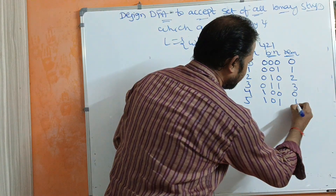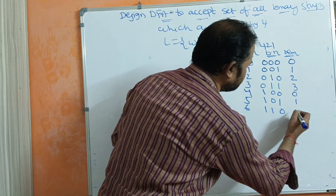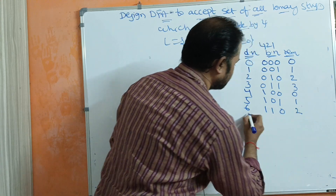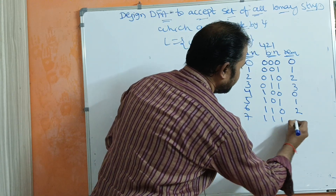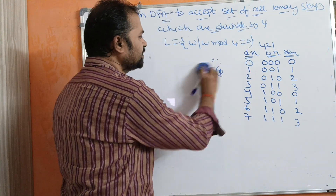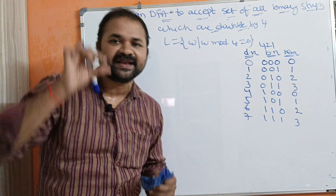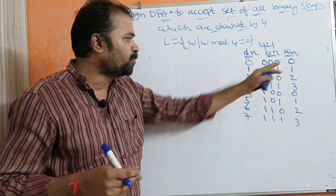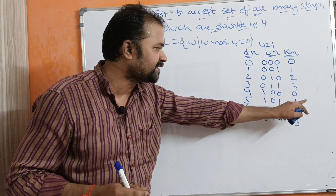Decimal 5 is represented as 101, and the remainder is 1. Decimal 6 is represented as 110, and the remainder is 2. Decimal 7 is all 1's — 111 — and the remainder is 3.